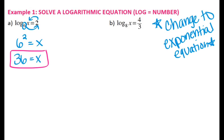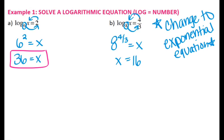For letter B, I have 8 to the 4 thirds equals x. Using a calculator, 8 to the 4 thirds is 16. So if you ever have a log equals a number, you always want to change it to exponential form.